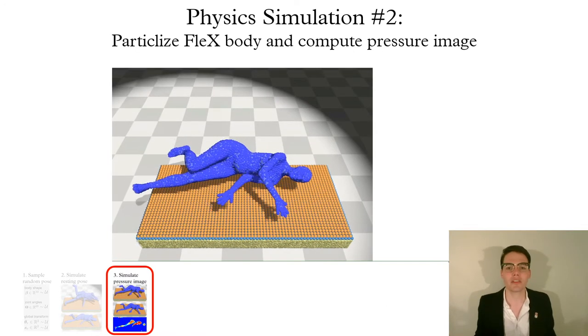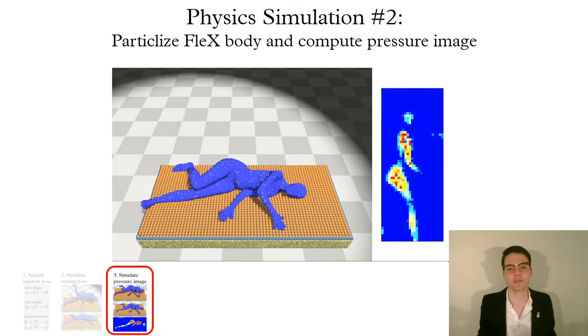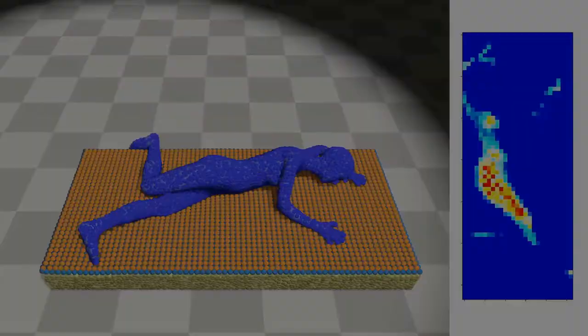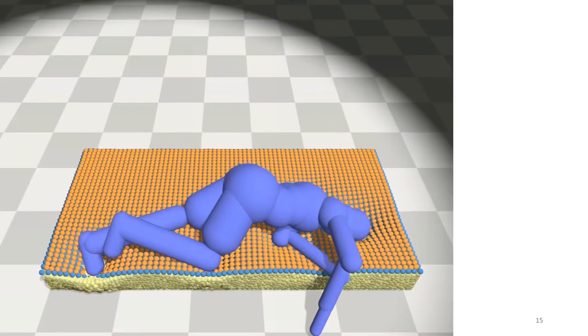Then, we use a second physics simulation with a non-articulated human mesh in order to find the pressure image. Here are some examples from our dataset that represent a variety of postures, including supine, lateral, prone, and many in between.